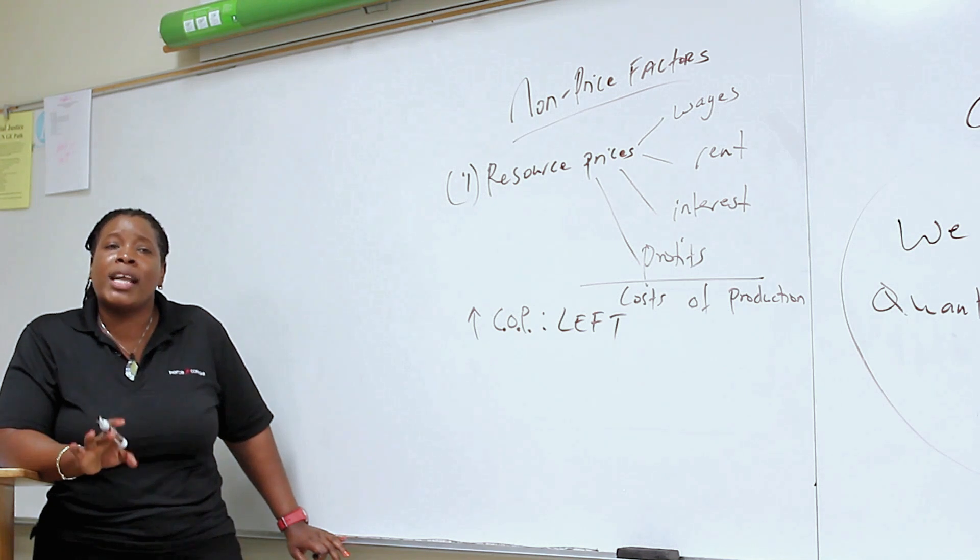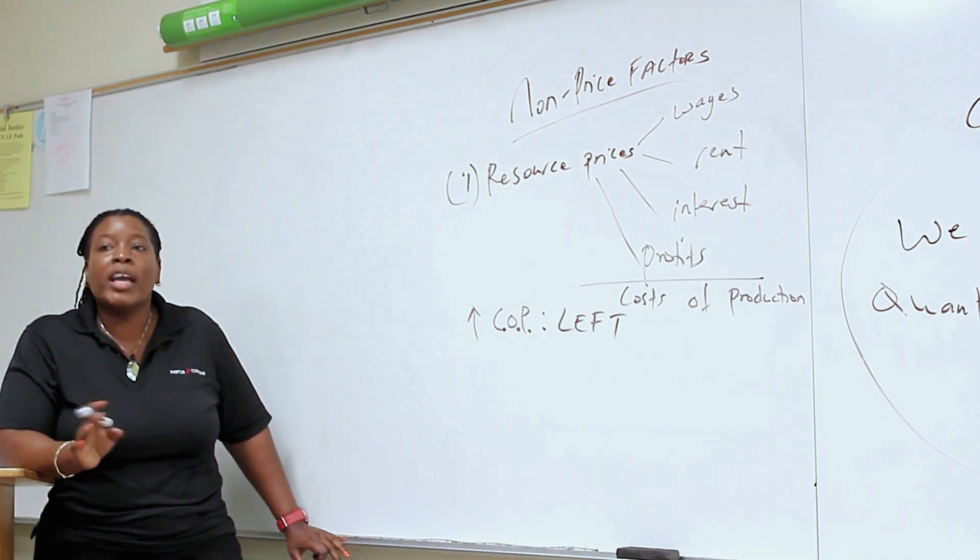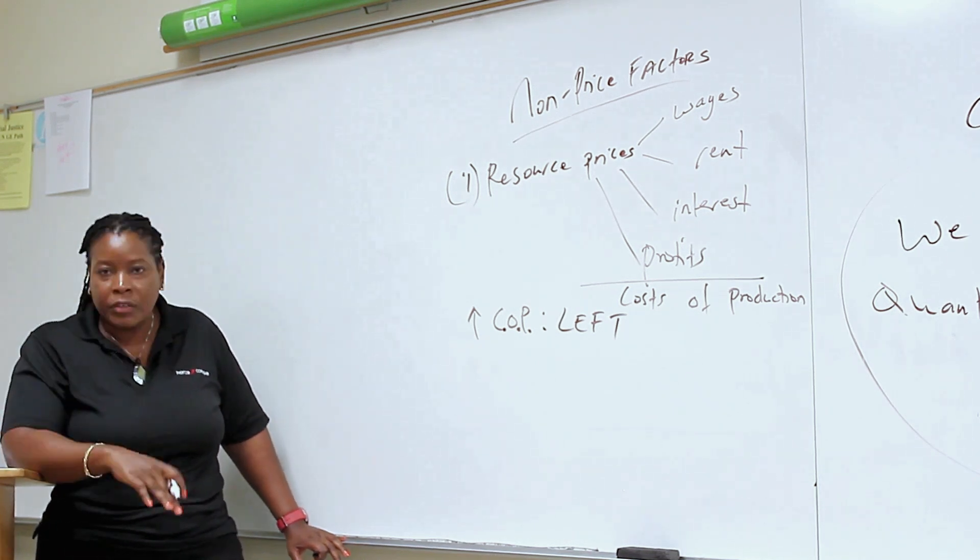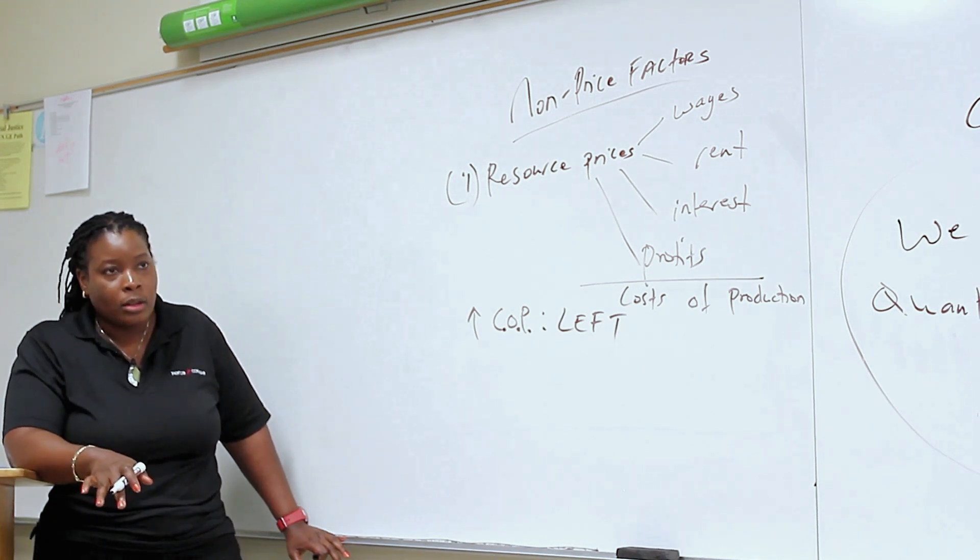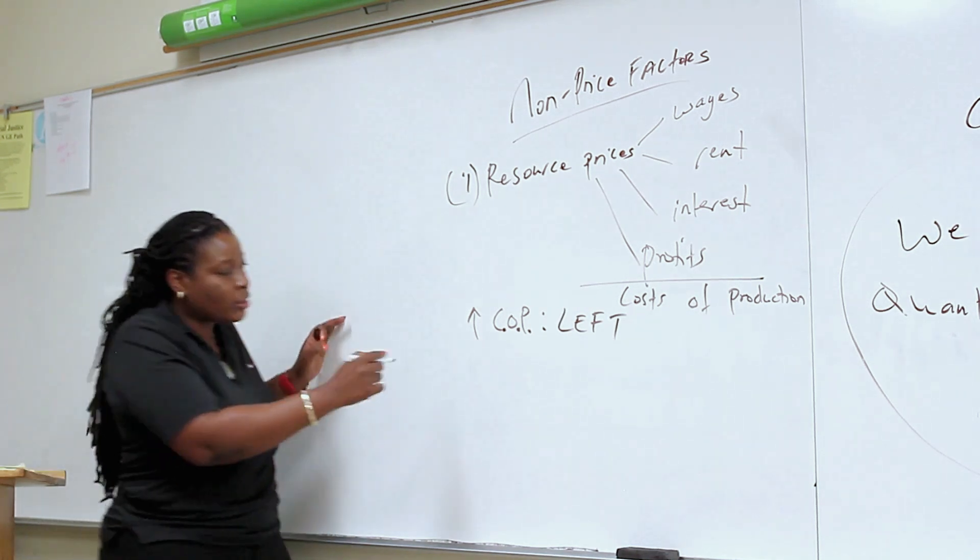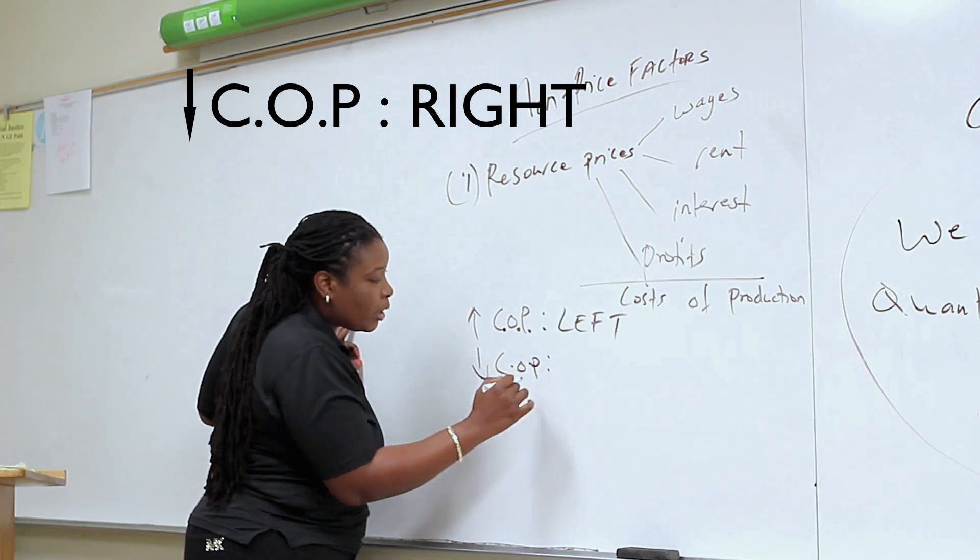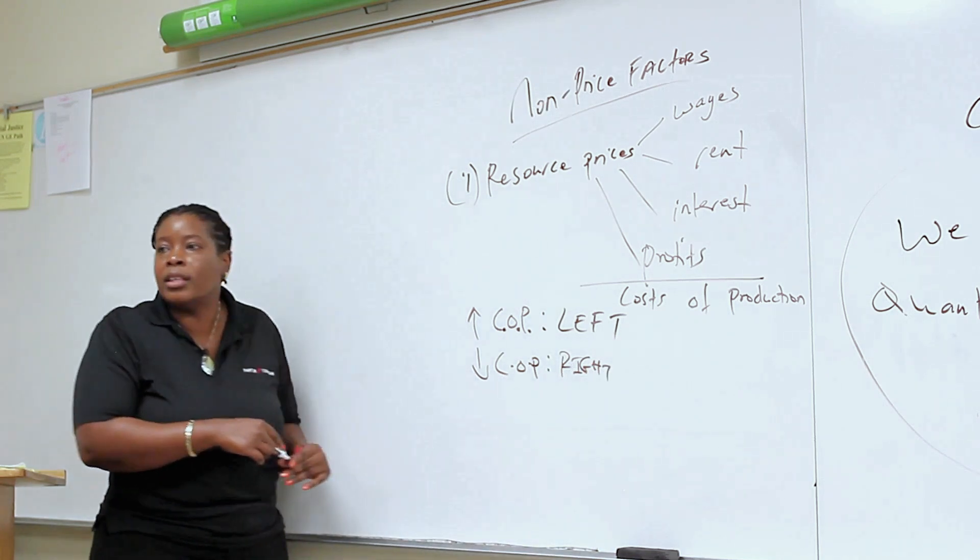I do not... I want you to get into the habit of saying right and left. Don't get into the habit of saying up and down. It's going to confuse you. Right is an increase, left is a decrease, and it works both ways for demand and supply. So get into that habit. Right is an increase, left is a decrease. Cost of production goes down. Which way are we shifting it? To the right. That's how you analyze these.